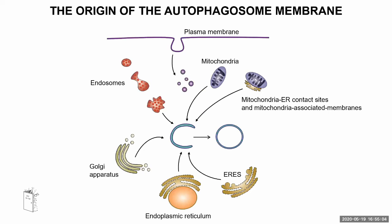Autophagy is actually quite a young field, so there are many questions still to be answered. One of the big questions in the field is the origin of the autophagosome membrane. When autophagy is happening, a new structure — the autophagosome — is forming. So who is actually giving lipids to this new structure? Where are the lipids coming from that help the structure grow?